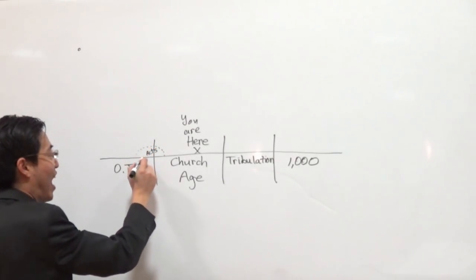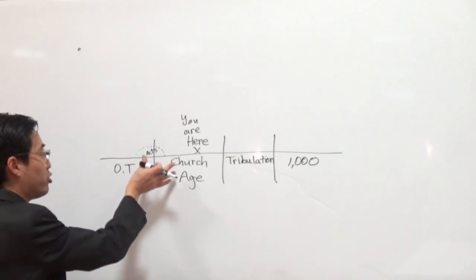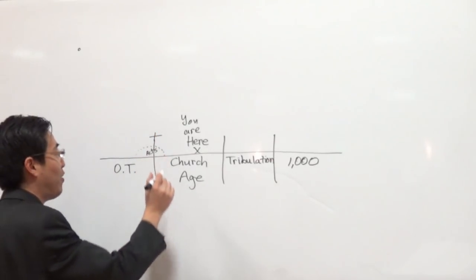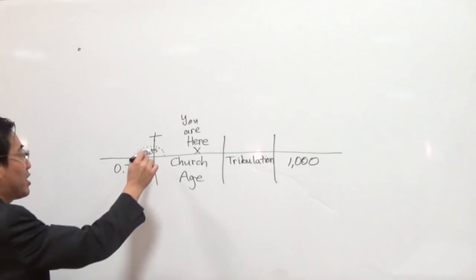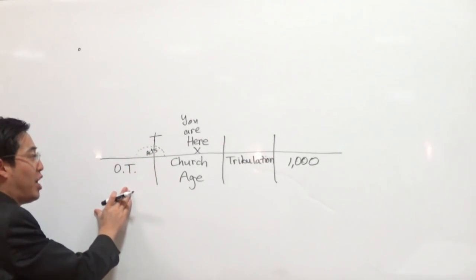So during that time of Acts, there was a transition of Old Testament and church age. Jew and Gentile. And that is undoubtable when you read the book of Acts. But what did the Jews do? They rejected. So because of that, when it switched to Gentile, God's program with the Jewish people was done.